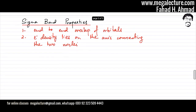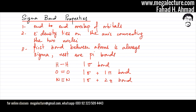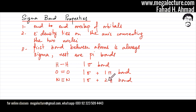The third property: the first bond formed between atoms is always a sigma bond — the rest are pi bonds. So whenever you have a single bond, that's a sigma bond. Whenever you have a double bond, it's one sigma plus one pi bond. And if you have a triple bond, the first bond is sigma and the remaining two are pi bonds. Remember: single bond = sigma; double bond = sigma + pi; triple bond = sigma + pi + pi.